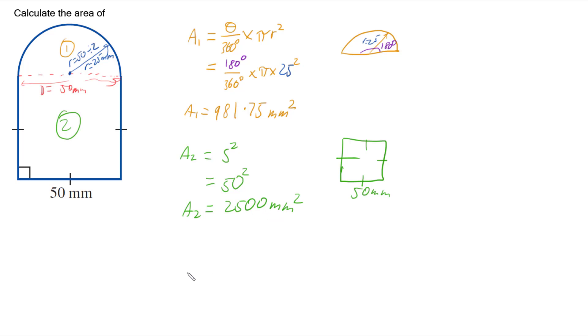And then to work out our total overall area, that's going to be area 1 plus area 2. So we're going to have 981.75 add on 2500, and we get a total area of 3481.75 mm squared.